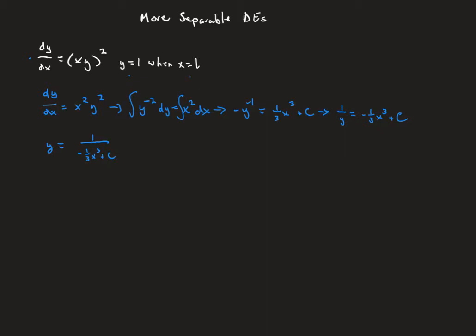Let's use the initial condition right now and plug in 1 for y and 1 for x. So that's going to look like 1 over (negative one-third times 1³ plus c), which is 1 over (negative one-third plus c). I'm going to solve for c by taking the reciprocal of both sides. The reciprocal of 1 is just 1, and on the right side we're going to get negative one-third plus c. Adding one-third to the other side, we get c = 4/3.